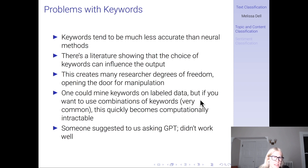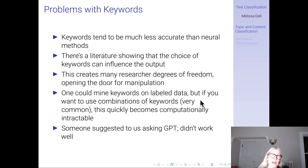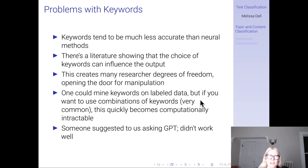Moreover, keywords tend to be much less accurate than neural methods, and there's a literature showing that the choice of keywords can influence output. If you're using something that's not very accurate to start with, and you have a lot of researcher degrees of freedom, that really opens the door for manipulation — because you're choosing things that might make a big difference when you only have 50% accuracy to start with.